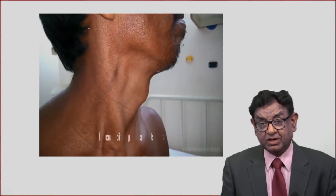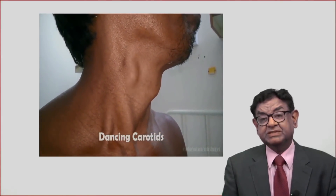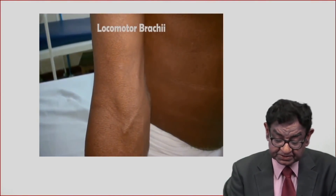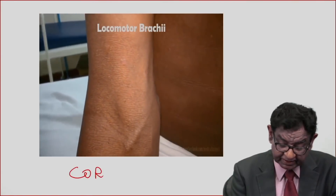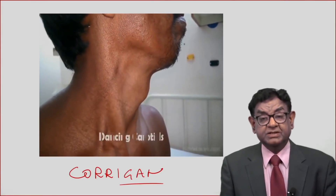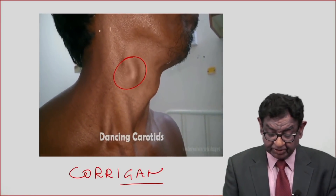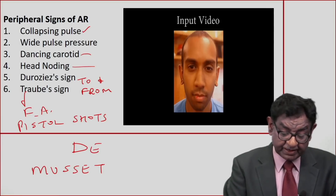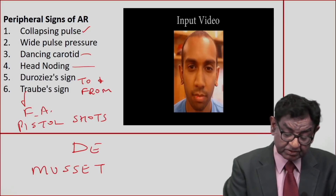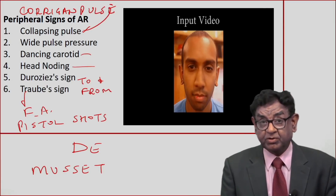This is the classical dancing carotid — stop the video and write down the name of this sign. The name of this sign is Corrigan's sign — the dancing carotid. Note: collapsing pulse is also known as Corrigan's pulse, while the dancing carotid highlighted here is Corrigan's sign.